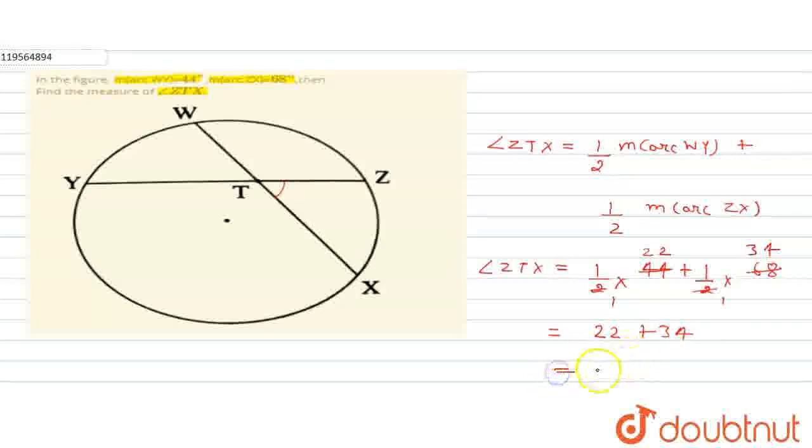And 22 plus 34 equals 56 degrees. So the angle ZTX equals 56 degrees. I hope you understood. Thank you.